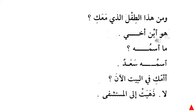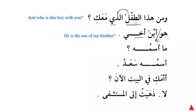Wa man hadha al-tiflu al-ladhi ma'aki — 'And who is this boy who is with you?' Tiflun is masculine, so we use al-ladhi. If it were hadhihi tiflatun, it would be al-lati. Huwa ibnu akhi — 'He is the son of my brother.' Akhi comes from akhun with ya' al-mutakallim added. Masmuhu — 'What is his name?' Ismuhu Sa'dun — 'His name is Saad.' Ismuhu is subject and Sa'dun is predicate.